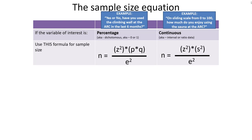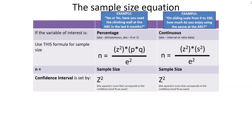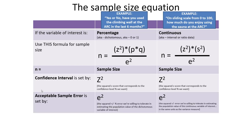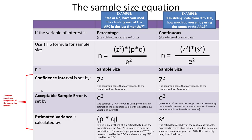Let's touch on each element of these equations briefly. In both cases, we're solving for n — the optimal sample size we're trying to determine. The first input is the confidence interval, represented as z squared, corresponding to the percentage level of confidence we want to specify. The e squared represents the acceptable sample error, or margin of error, that we're willing to tolerate in our estimates. The third component, which differs between the two equations, is the estimated variance in the population — represented as p times q for percentage variables.